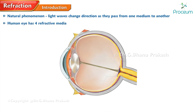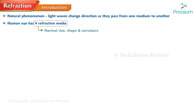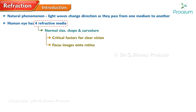In the human eye, there are four refractive media: the cornea, the aqueous humor, the lens, and the vitreous humor. The normal size, shape, and curvature of these media are critical factors in achieving clear vision by properly focusing images onto the retina. The anterior surface of the cornea, in particular, plays a crucial role in the maximum amount of refraction.